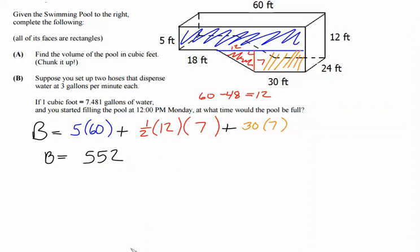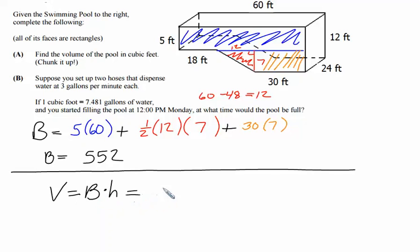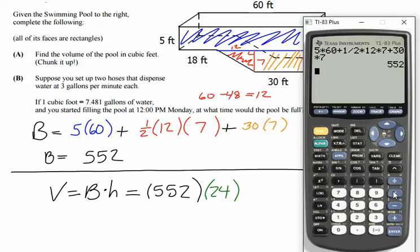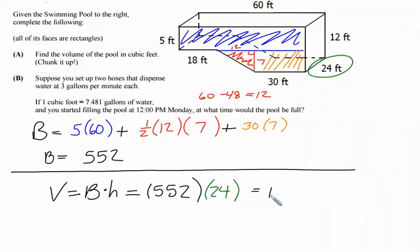And if we want the volume of the pool, which is the case in this aspect of the problem, we're going to take the area of the base times the height, which is the distance between bases. So the base is 552. The height is going to be this 24 for the distance between those bases. So we're going to take the 552, multiply it by 24, and the volume is 13,248. So volume is 13,248 units are going to be cubic feet. Make sure you put those in the problem. And that would be our final answer for part A.